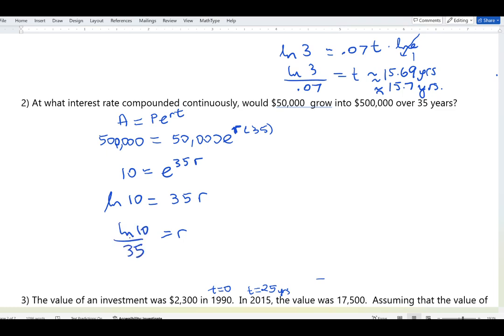Entering ln(10) / 35 into the calculator — making sure to close the parenthesis after 10 — gives approximately 0.0658. Multiplying by 100, the interest rate is roughly 6.58%, or about 6.6%.